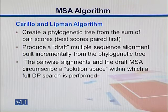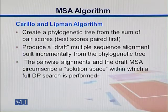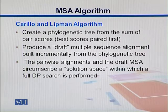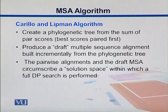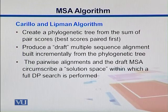In general, this algorithm can be summarized into the following steps. First, we create a phylogenetic tree from the sum of pairs scores. We perform the sum of pairs scoring as in the previous example, and then we produce a draft alignment built incrementally from the tree. Then, the pairwise alignments and the draft MSA circumscribe a solution space within which we can implement a dynamic programming search.